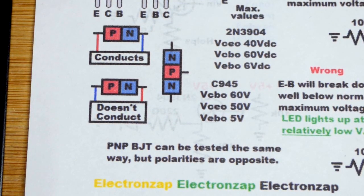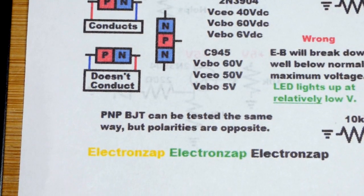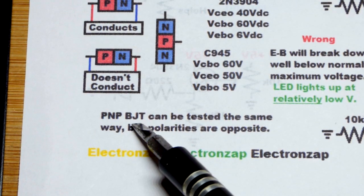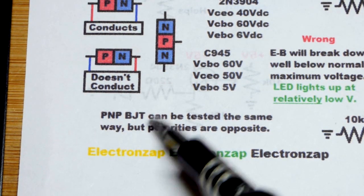Also, since we can already see this note, you can do this testing with the PNP bipolar junction transistor. Just remember that polarities are opposite.